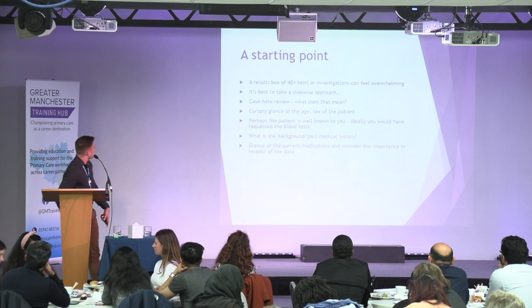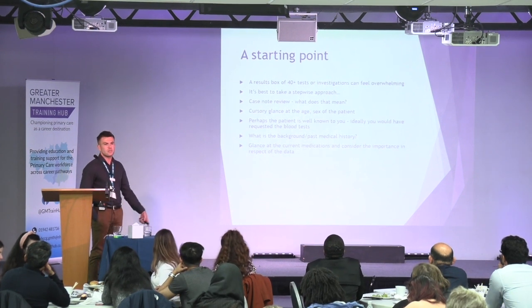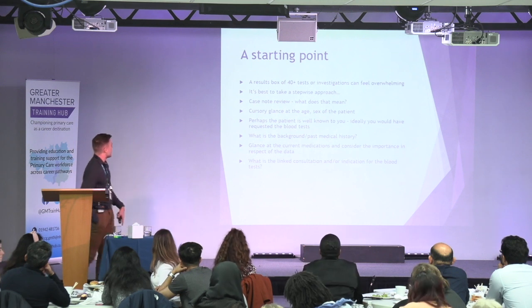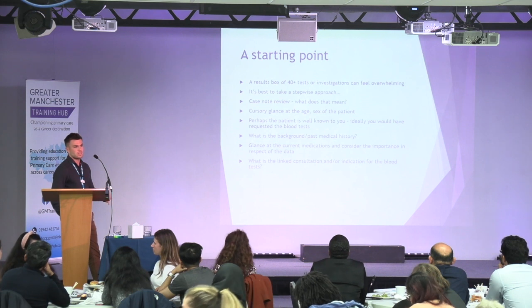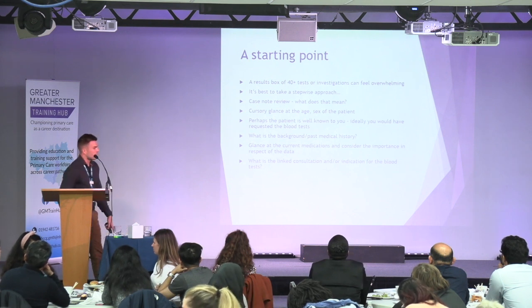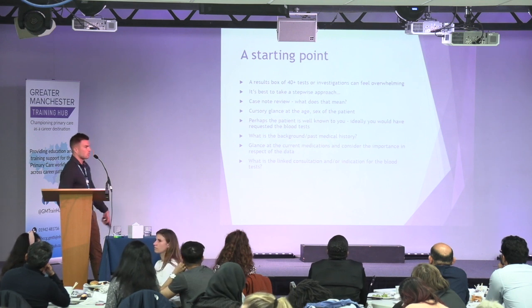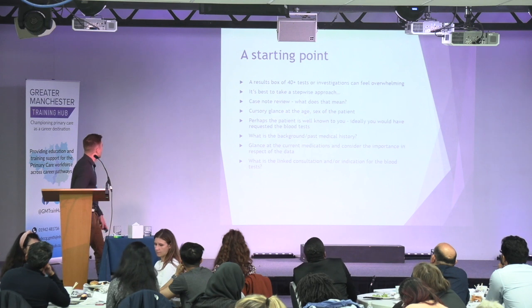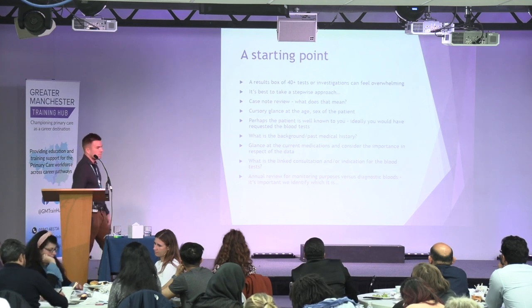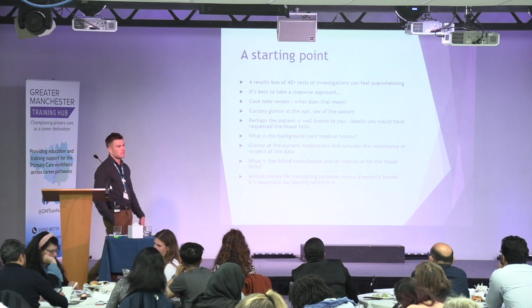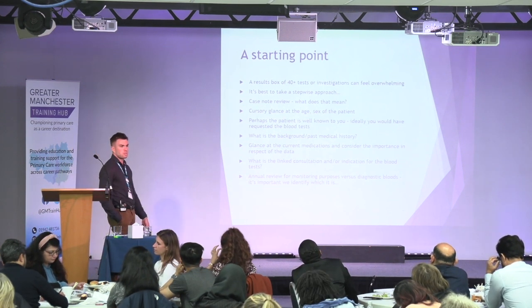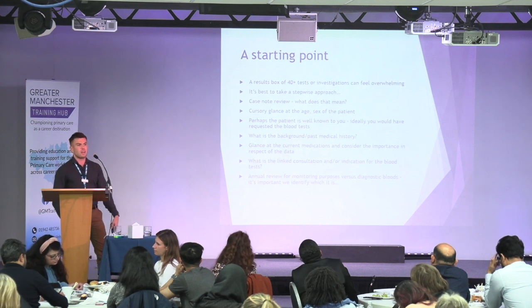Glance at the current medications and consider the importance in respect to the data. If we're looking at UNEs, for example, if we're seeing lots of diuretics, then we need to see that in context. What's the linked consultation and indication for the blood test? When were the bloods requested, who by, and what for? That gives us a good idea of what we might be interpreting in the context of. And finally, just the annual review process for monitoring purposes versus diagnostic bloods. It's important we identify which it is. With recent shortages of tubes, we may have been pushed more for urgent bloods, but it's important to identify whether this is for monitoring purposes and whether we've found something incidental or actually looked for it.